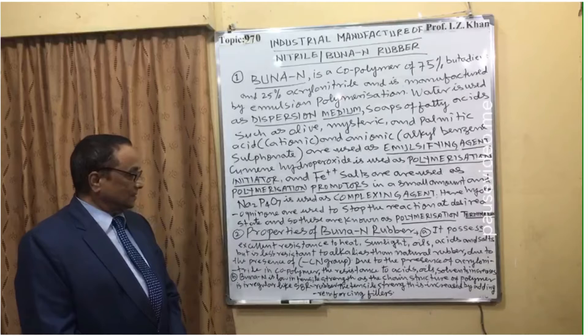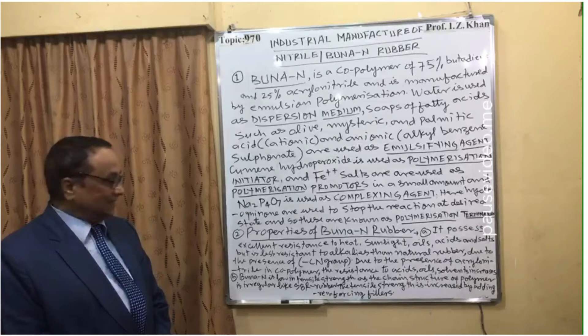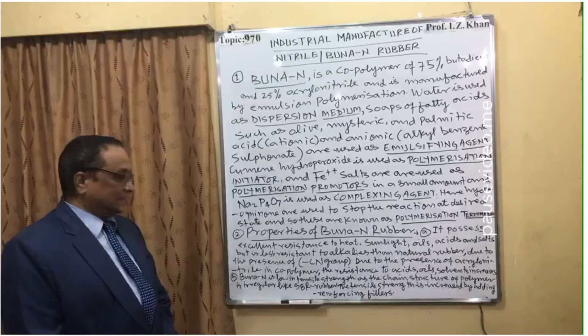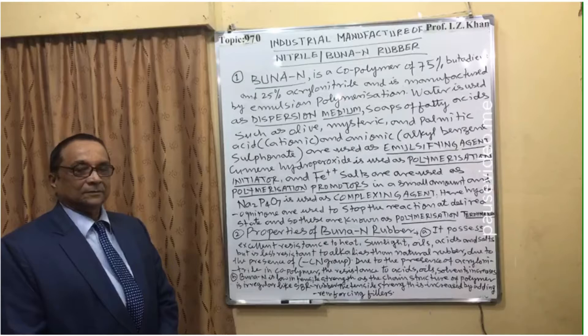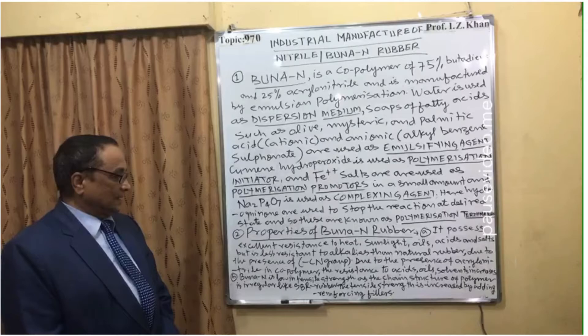Due to the presence of the cyanide group (–CN) from acrylonitrile in the copolymer, the resistance to acids, salts, and solvents increases. Buna N rubber has low tensile strength because the chain structure of the polymer is irregular, similar to SBR rubber. The tensile strength can be improved by adding reinforcing fillers.